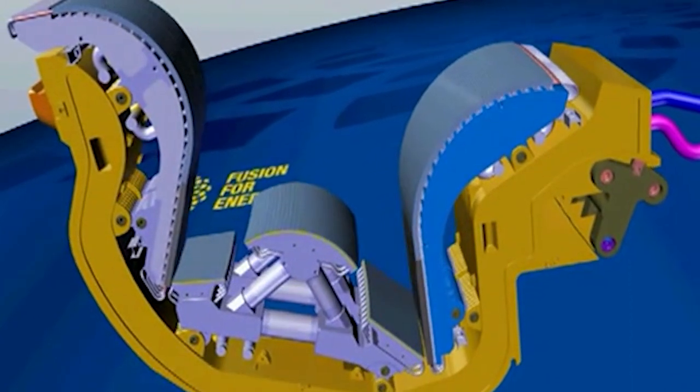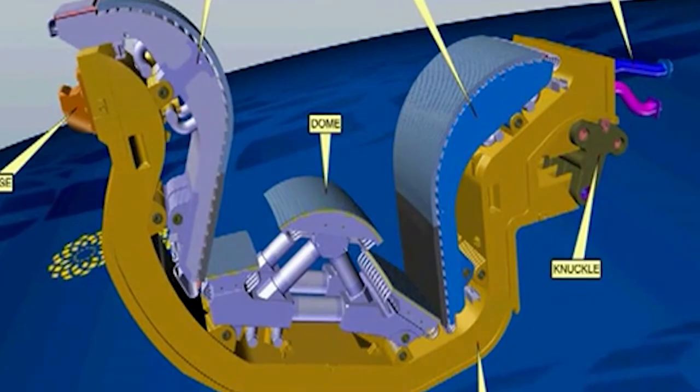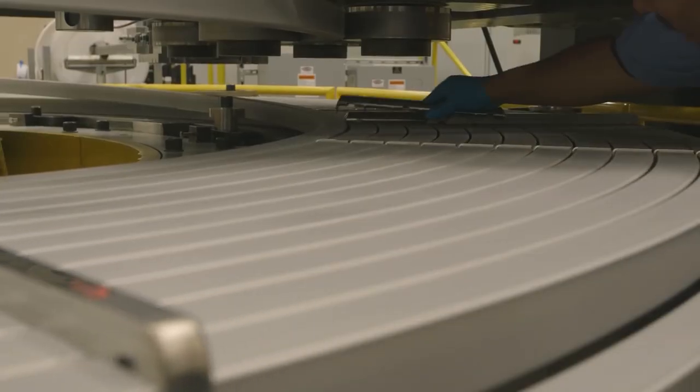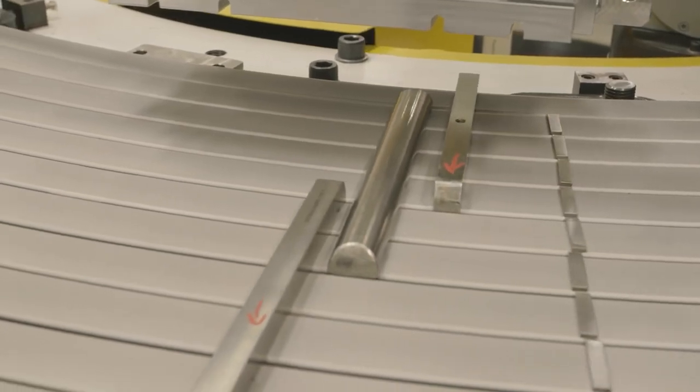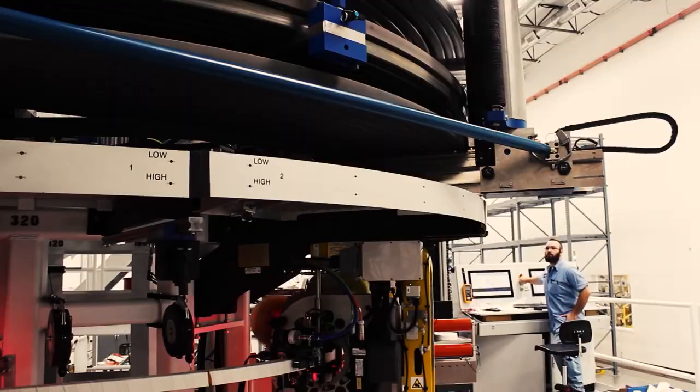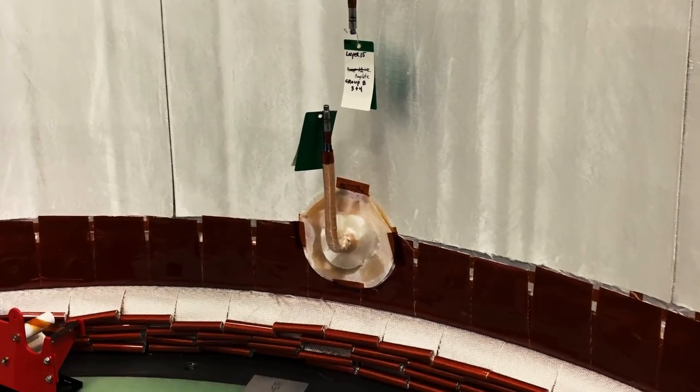As much as the vacuum vessel forms the home and the diverter is the garbage chute, we need to give credit to our magnets. They will be the ones doing a lot of the work. Without them, we wouldn't have the possibility of a working Tokamak. Three systems of magnets will be working together inside the ITER to shape the plasma into a giant star-lit donut.